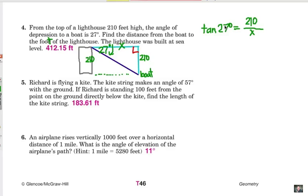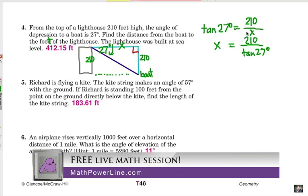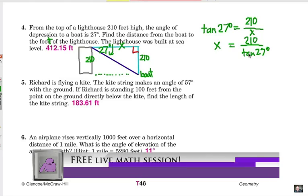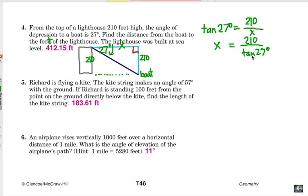Now, a little trick I use is normally we would cross multiply tangent of 27 degrees times X, but basically, if they're on the diagonal, I can flip-flop them. In other words, I can think of this as X equals 210 divided by tangent of 27 degrees. Switch diagonally, and then all you have is a division problem to work on. So I find the tangent of 27 degrees in my calculator. I divide 210 by that, and now I should get 412.15 feet.